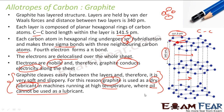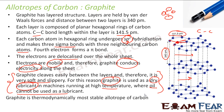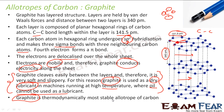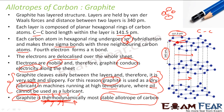At very high temperatures we cannot use normal lubricants like motor oil, because they would burn. So we use graphite as the lubricant since graphite can withstand high temperatures. Please note: graphite is the most stable allotrope of carbon — this is asked frequently in exams. Thermodynamically it is the most stable, with a very high melting and boiling point.